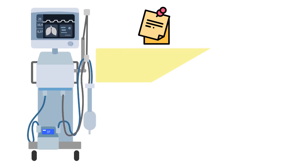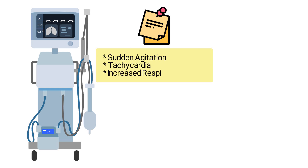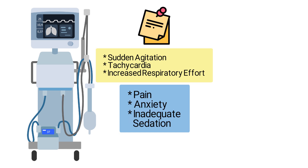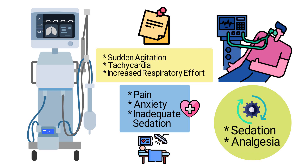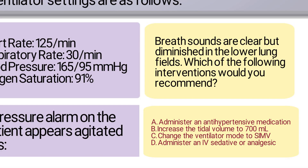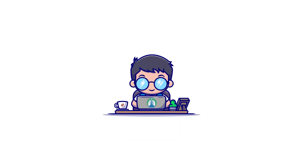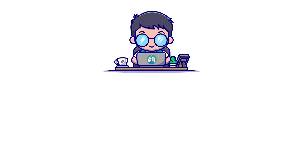So the key takeaway is this: in mechanically ventilated patients, sudden agitation, tachycardia, and increased respiratory effort are often signs of pain, anxiety, or inadequate sedation, especially after surgery. Addressing these symptoms with appropriate sedation or analgesia should always be considered before making changes to the ventilator settings. Taking everything into consideration, the correct answer is D — administer an IV sedative or analgesic.